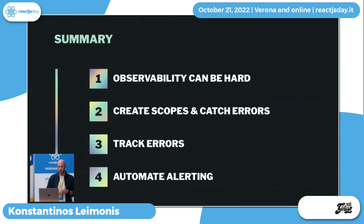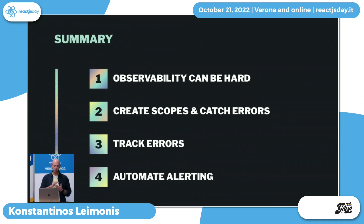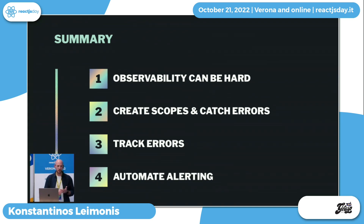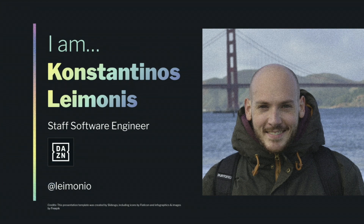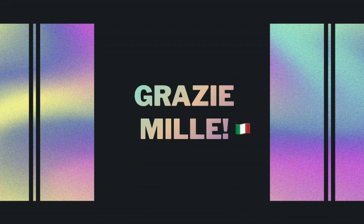To sum up: observability can sometimes be hard to implement and it might not be that straightforward, but the most important bit is that we need to create scopes and catch errors in those scopes so we can identify and mitigate at the specific level of each microfrontend. We need to track errors as we did in this case, and also automate alerting to get notified when something really bad happens in production. If you have any questions, feel free to share here or find me afterwards - grazie mille!